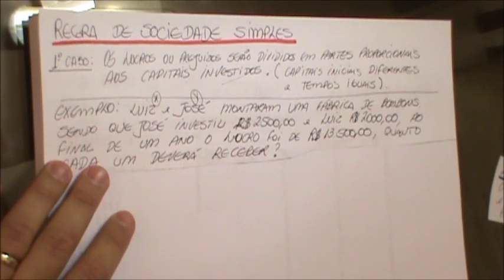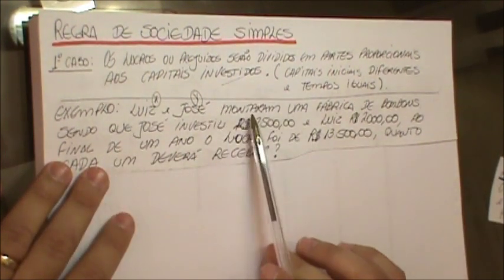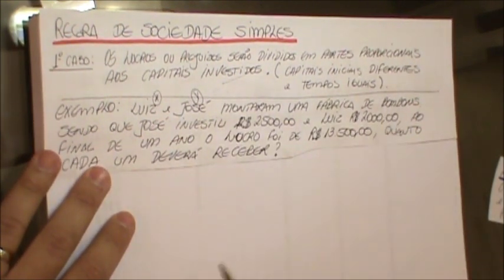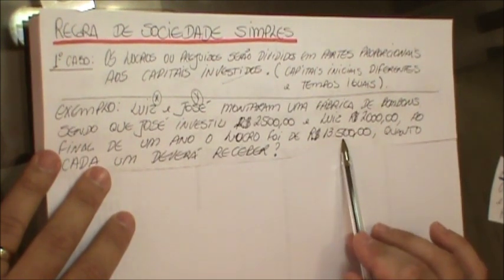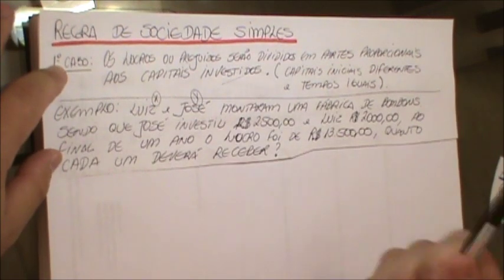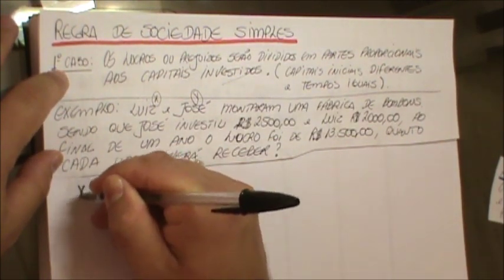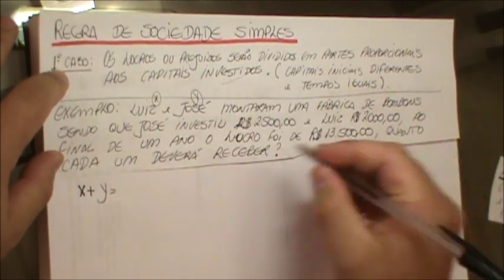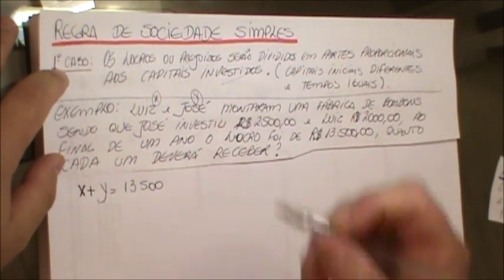Vamos imaginar o seguinte exemplo. Você tem o Sr. Luiz e o Sr. José. Eles montaram uma fábrica de bombons, sendo que o José investiu R$2.500 e o Luiz R$2.000. Ao final de um ano, o lucro foi de R$13.500. Quanto cada um deverá receber? Sendo assim, vamos resolver. Eu vou dizer que X mais Y é igual a R$13.500, ou seja, o que cada um vai receber de lucro totaliza R$13.500.